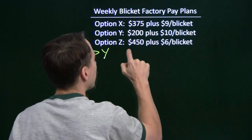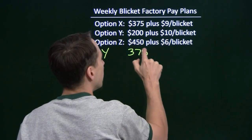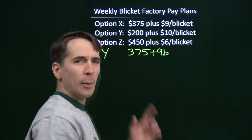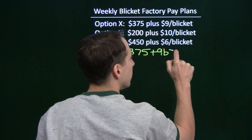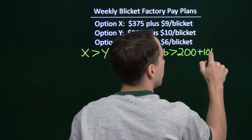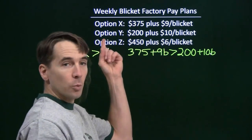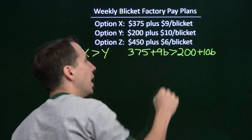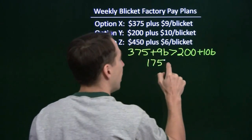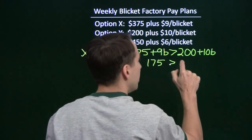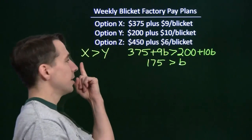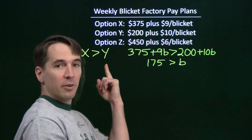For option X, I make $375 plus $9 for each blicket, and I'm going to let B stand for the number of blickets I make. I want to see when that is greater than 200 plus 10B, which is what I make for option Y. We're going to isolate the variable — subtract 9B from both sides and subtract 200 from both sides. We're left with 175 on the left and B on the right. This tells us that if I make less than 175 blickets, then option X is better for me than option Y.